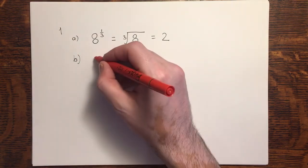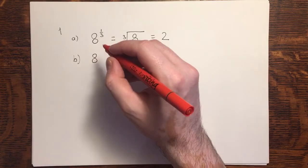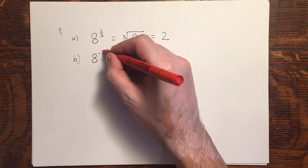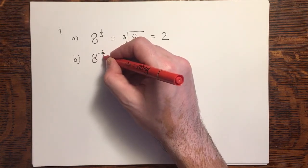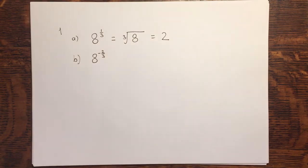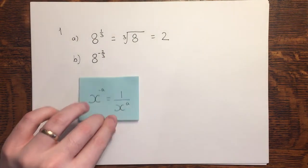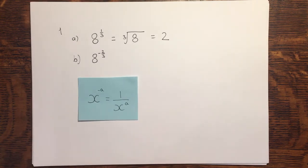In part B we're given a slightly more complex index. It's negative and the numerator is no longer one. In order to resolve this I have to apply a couple of different rules. The first of those is that a negative index gives me a reciprocal. I'll apply that now.